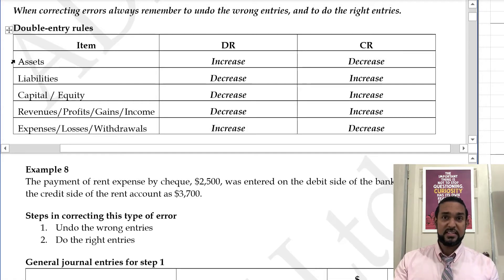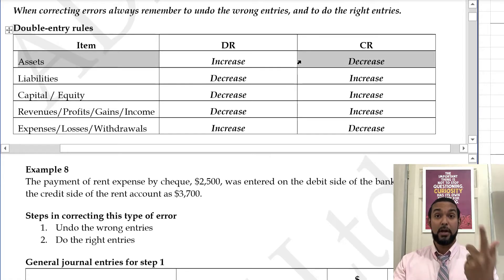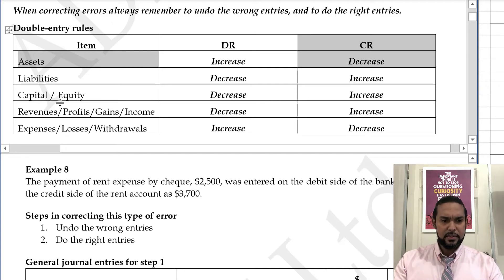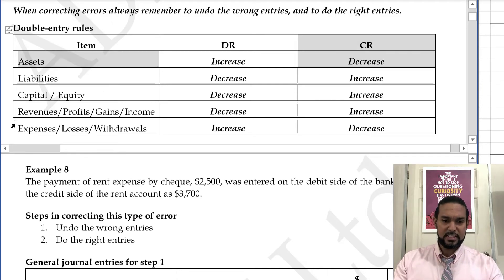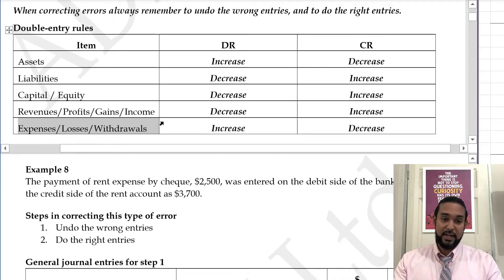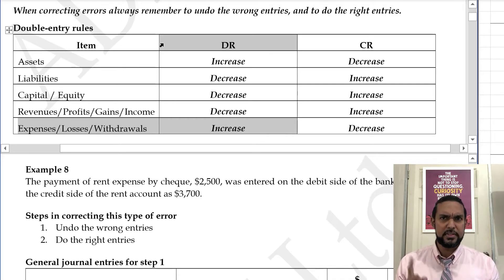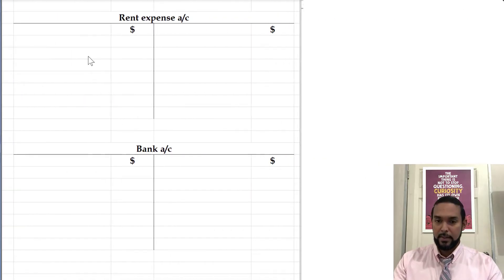So if we pay something with a check, that means our asset of bank is going to decrease because money is coming out of the bank, which will require a credit. The debit will go to the expense, the rent expense, which is increasing, and that would require a debit. Let's go across the T accounts and take a look at how this was supposed to look.